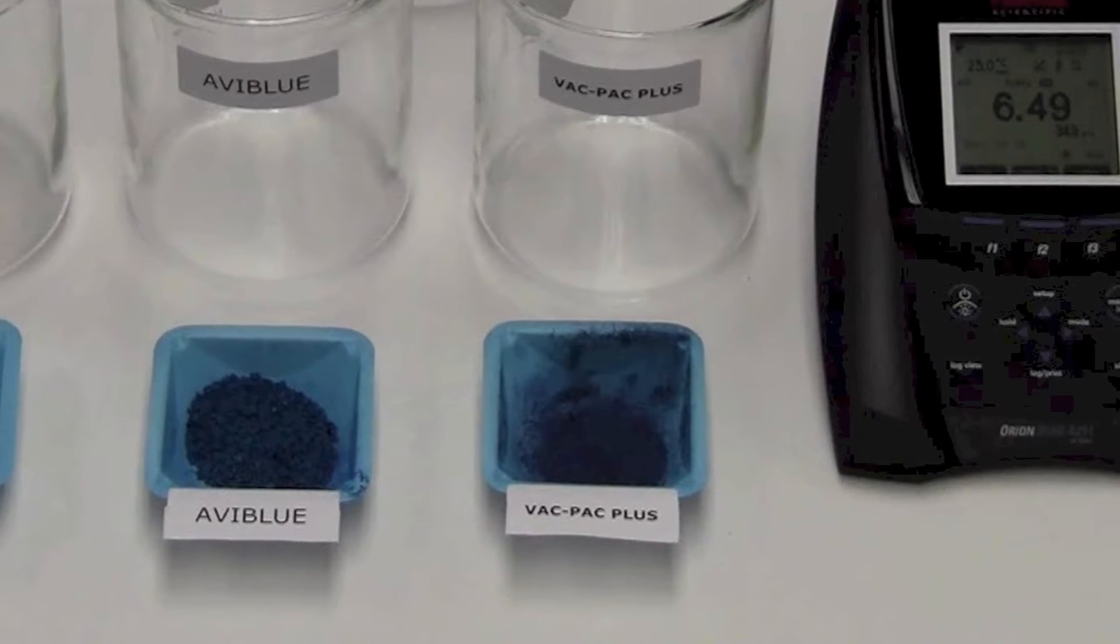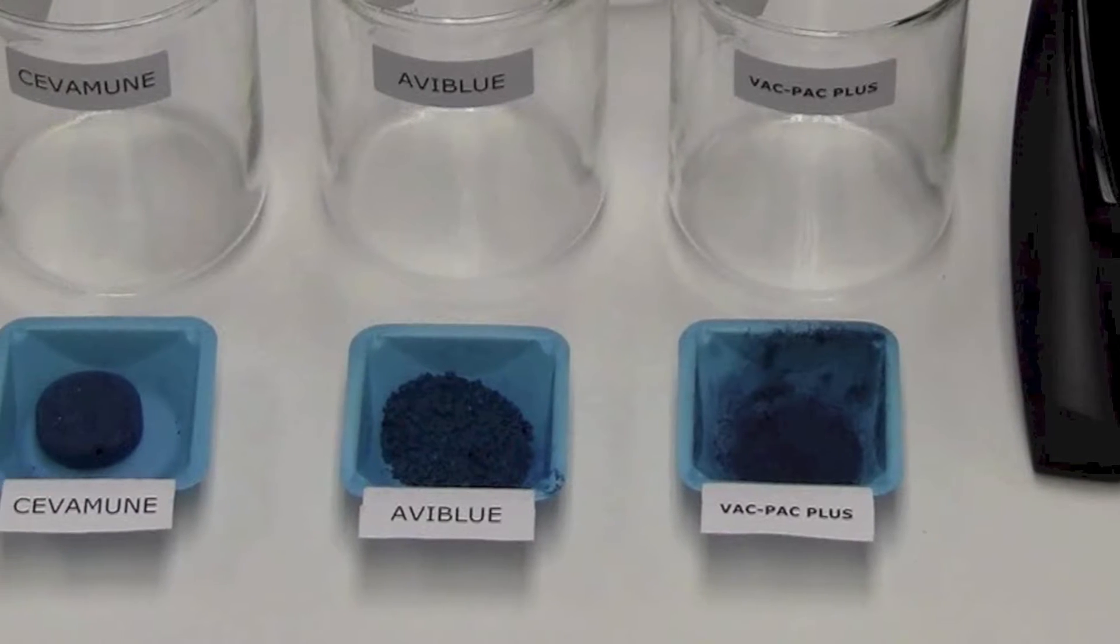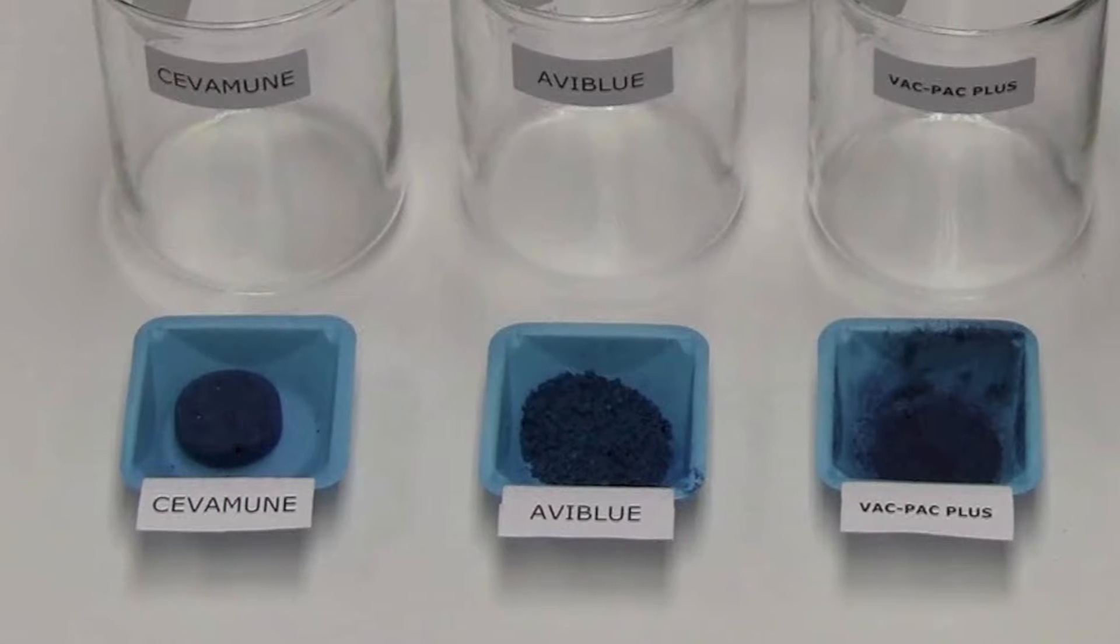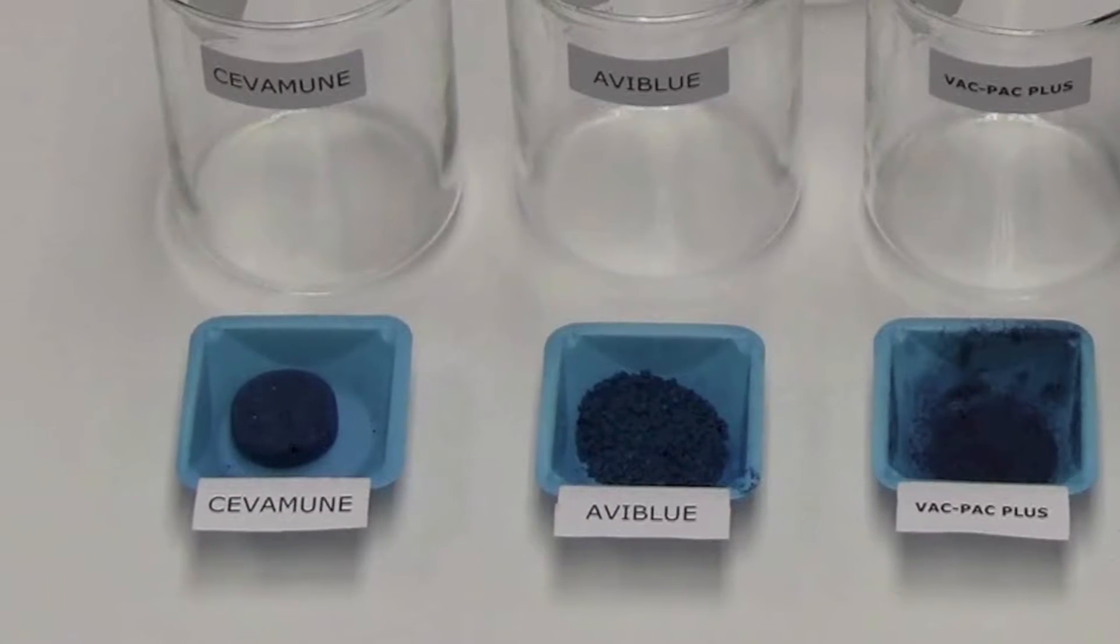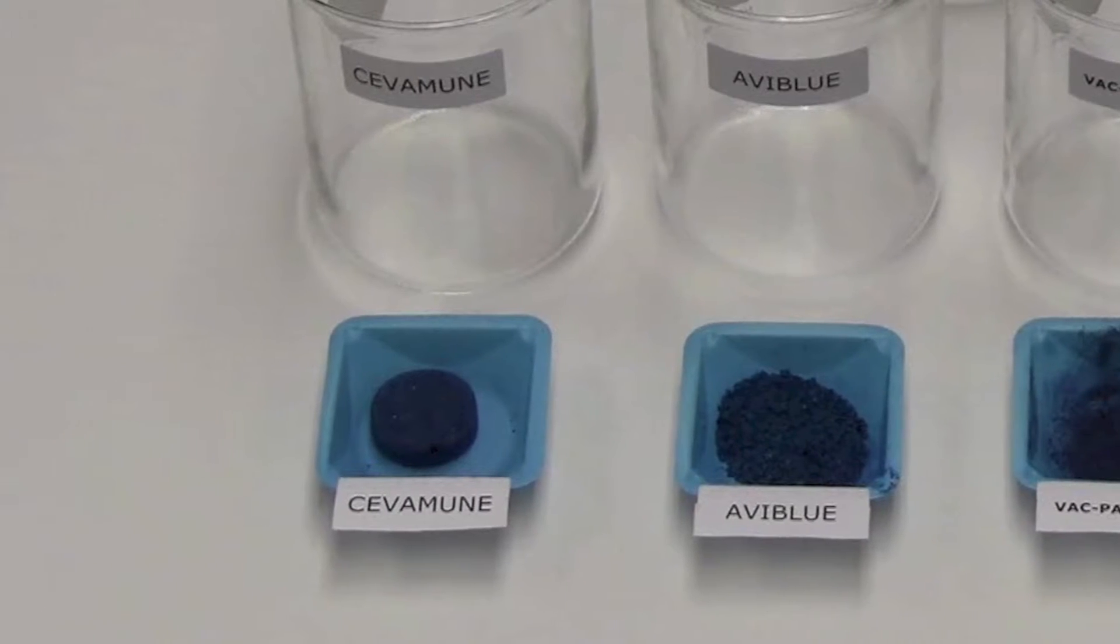In the center, AvaBlue, a granular effervescent powder used at 120 grams per 1,000 liters of drinking water. On the left, Sivamune, a compressed tablet weighing about 20 grams. Sivamune is labeled to use 10 tablets, or 200 grams, per 1,000 liters of drinking water.